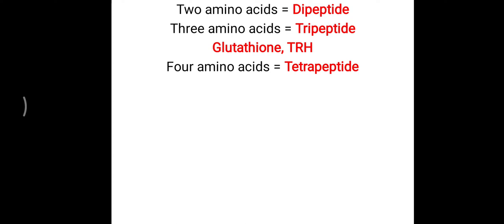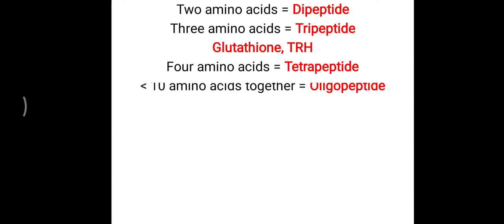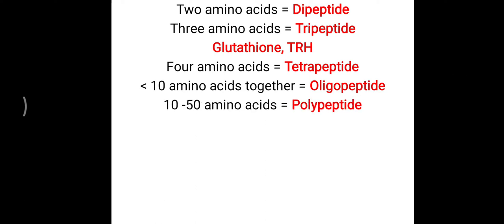Four amino acids together make a tetrapeptide. Less than ten amino acids together are collectively called an oligopeptide — similar to an oligosaccharide.